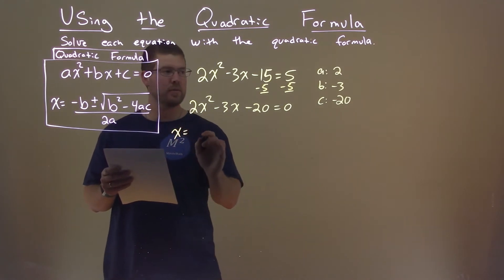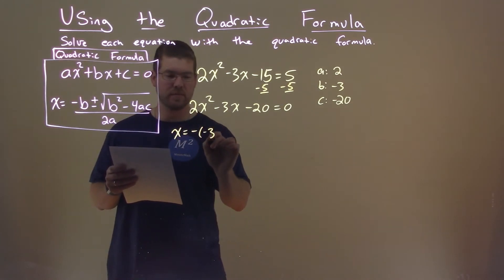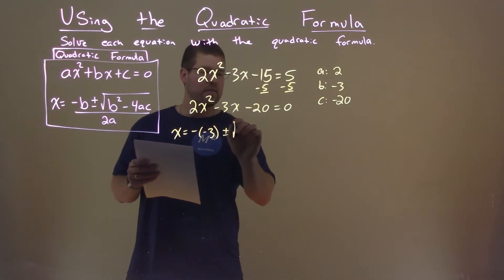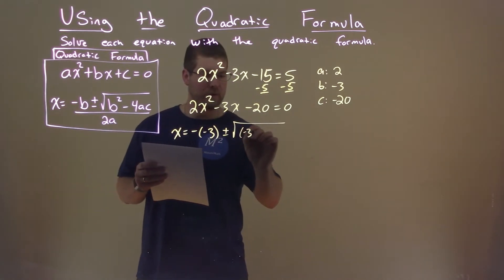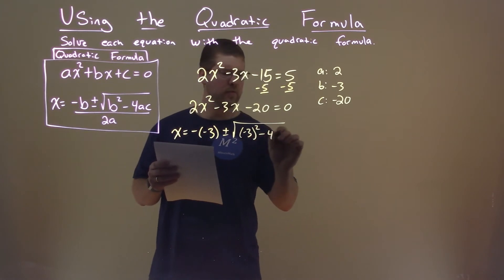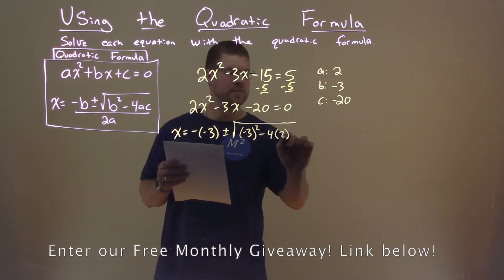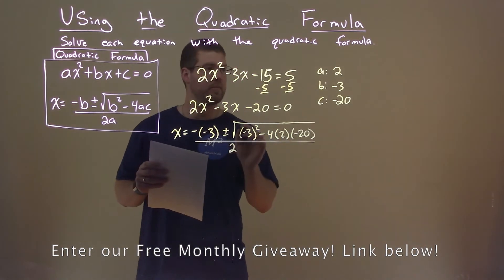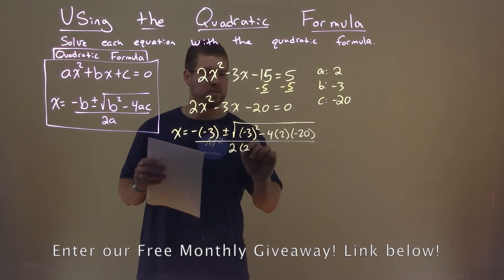x equals negative b, or sorry, negative 3, right, b being negative 3, plus or minus the square root of negative 3 squared, minus 4, times a, which is 2, times c, which is negative 20, all over 2 times a, which is 2.